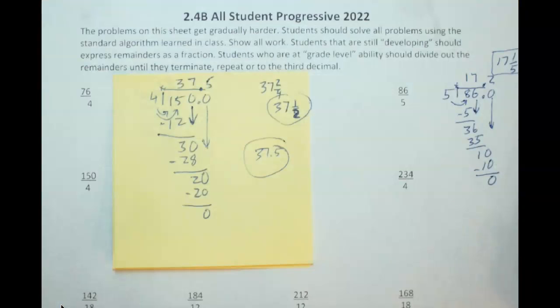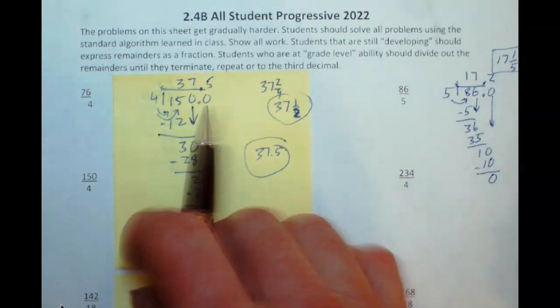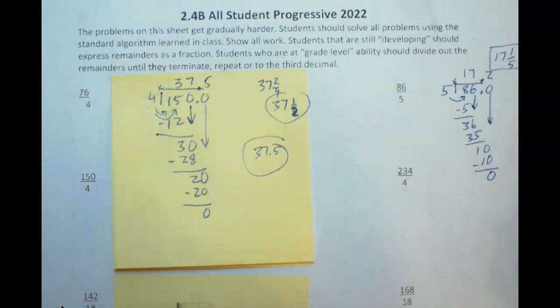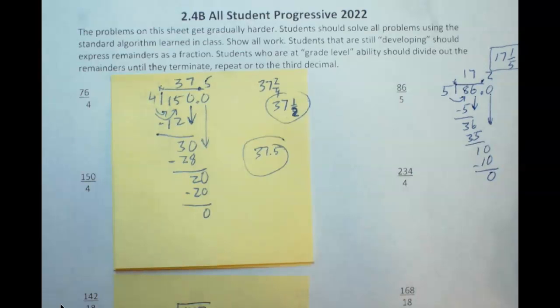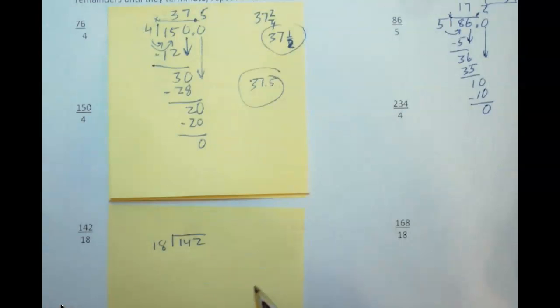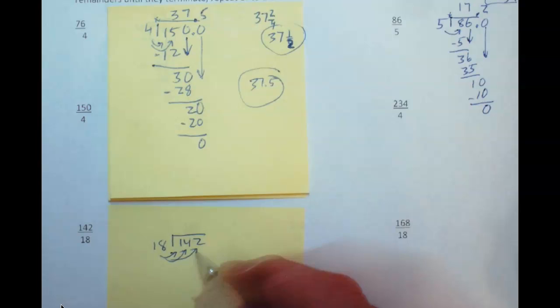Alright, let's take one from the next row of problems. Getting a little bit harder, each row gets a little bit harder. This one here, I think we're going to get a repeater if I don't remember right. So we have 142 and we're divided by 18. Tough problem, we're going to have to do some ciphering on the side here. 18 doesn't go into 1, it doesn't go into 14, it will fit into 142. So we have to think about this.